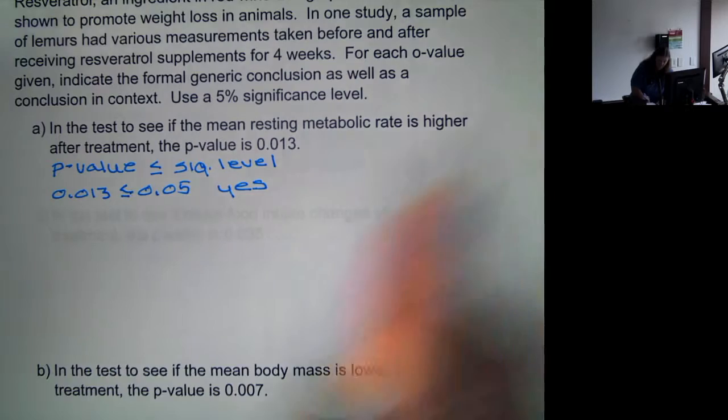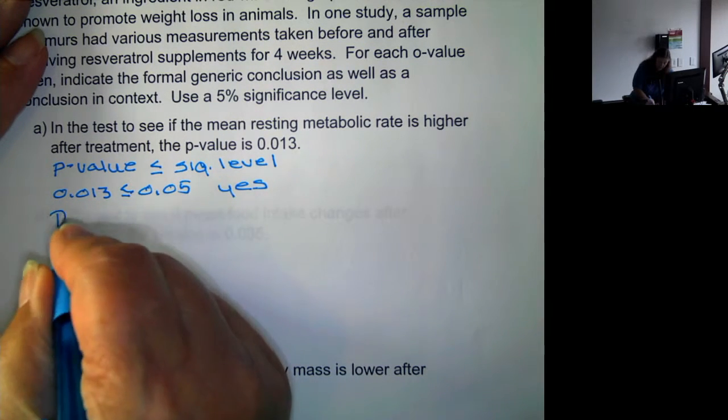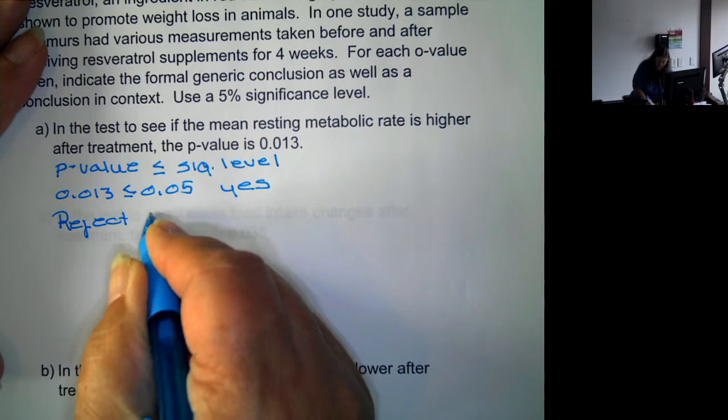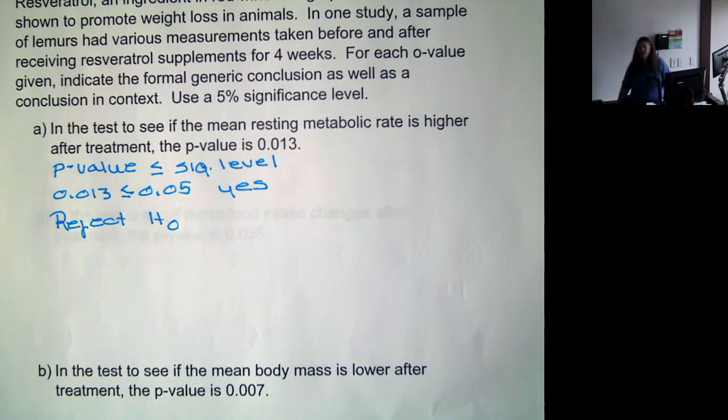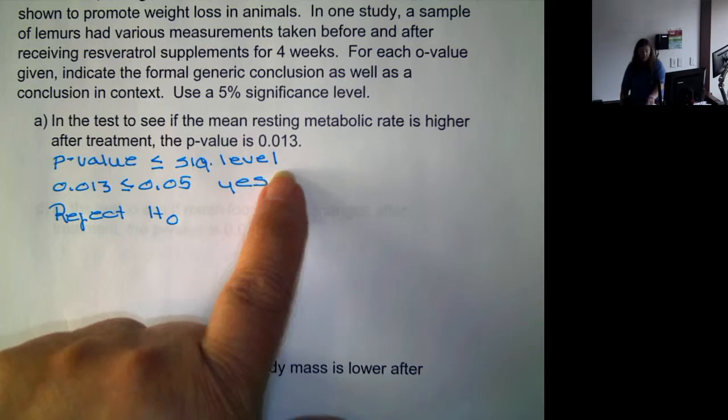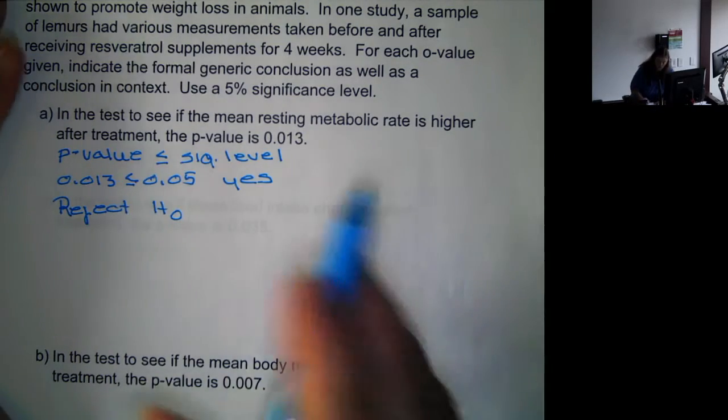So if it is, our generic conclusion is to reject the null hypothesis. That means 5% is our cutoff and this is 1.3%. So there's a 1.3% chance of the results happening by chance, which is very small.